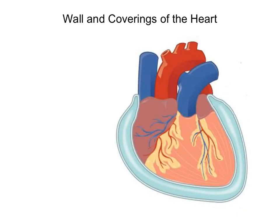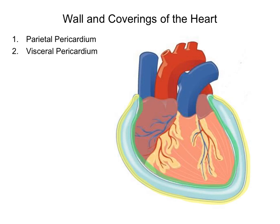The membrane surrounding the heart is called the pericardium, and because the pericardium is a serous membrane, it has four parts. The first part is called the parietal pericardium, which is the outermost membrane surrounding the heart. The next part is the visceral pericardium, which is the innermost membrane and the membrane that actually touches the heart itself. In between them is the pericardial cavity, and within the pericardial cavity you will find pericardial fluid, which acts as a shock absorber and helps reduce friction.